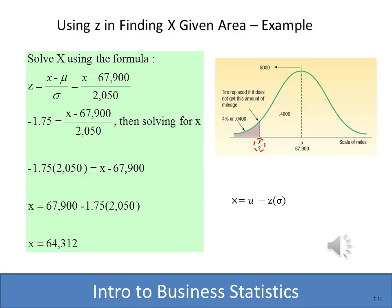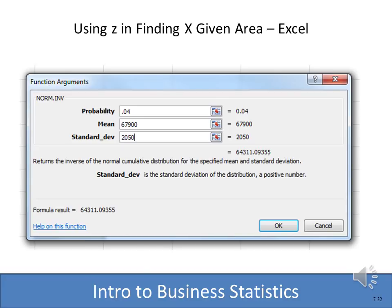Once we have the Z value, we can solve for X. Following the algebra, X equals 64,312. The formula is X equals mu minus Z times the standard deviation — it's minus because we're going to the left. If looking for a higher value, we would add Z times the standard deviation. Excel's norm.inv function in Excel 2010 and 2013 solves this easily: just enter the probability, mean, and standard deviation to get the same answer.